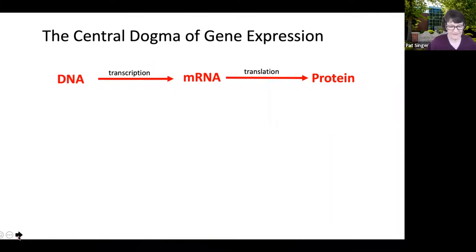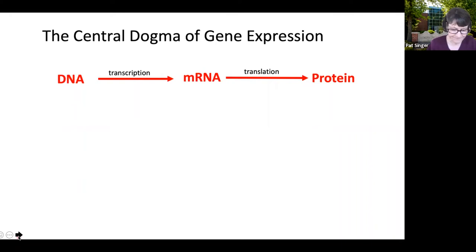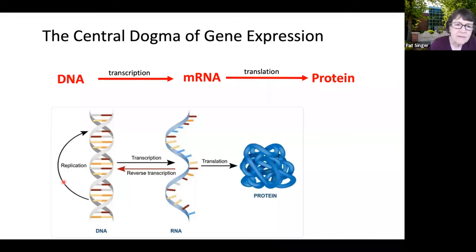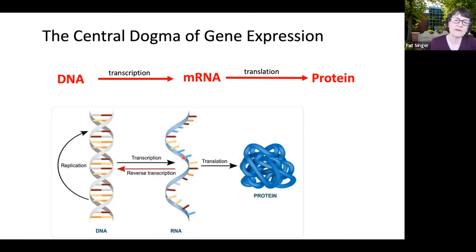The central dogma of gene expression organizes everything we think about in genetics. I remember the first time I saw it — it was simply beautiful. DNA codes for protein. In the process of gene expression, double-stranded DNA is converted into a single strand of RNA called messenger RNA. Reading one of the two strands of DNA to create a messenger RNA is called transcription. The sequence of bases in the RNA is then translated into a protein.